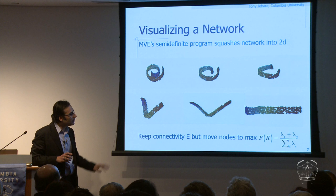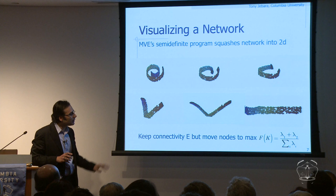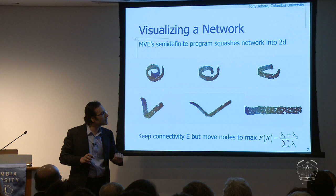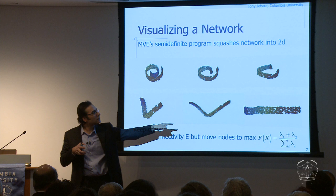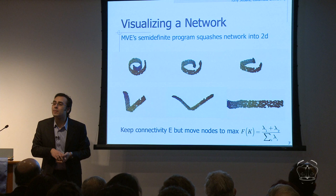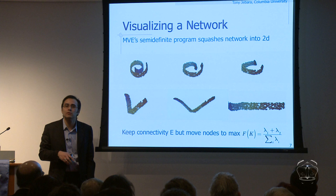Basically, we're finding another matrix: instead of matrix E, we find matrix K which is two-dimensional. The stretchiness in the top dimension and the second dimension is really large compared to the total stretchiness in all other dimensions, where lambda is the stretchiness of each dimension. If that's 100%, this is a 100% 2D network. So we run this to visualize networks.